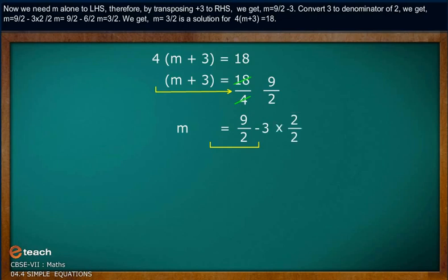Convert 3 to a denominator of 2. We get m equals 9 by 2 minus 3 times 2 by 2. m equals 9 by 2 minus 6 by 2. m equals 3 by 2.